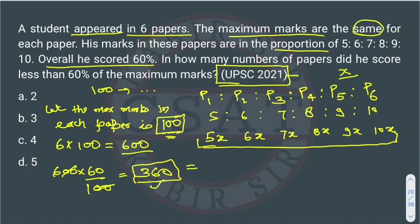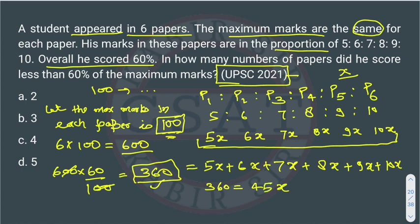We also know that in each paper how much marks he is getting. So what we can do? We can add these marks also: 5x + 6x + 7x + 8x + 9x + 10x. So 360 will be equal to 45x. Now 45 will come to this side. We can divide it. From 15 we can divide. So the x value is 8.